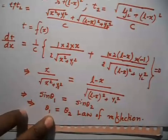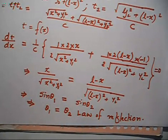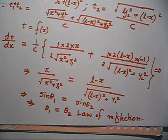So we are proving the law of reflection using Fermat's principle. We derived the law of reflection and discussed Fermat's principle: among all paths available from one point to another, light will choose the path of minimum time.